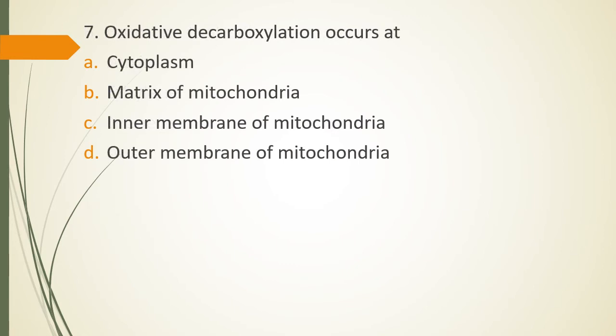Question 7, oxidative decarboxylation occurs at Option A, cytoplasm, Option B, matrix of mitochondria, Option C, inner membrane of mitochondria or Option D, outer membrane of mitochondria. Oxidative decarboxylation occurs at, the correct answer is Option B, matrix of mitochondria. What is oxidative decarboxylation? As the word itself suggests, oxidative means oxygen is being utilized, decarboxylation. D means removal, carboxylation means carboxyl group. So, carbon group is removed.